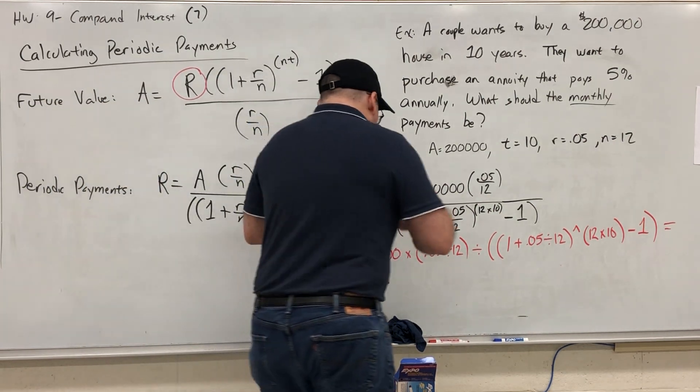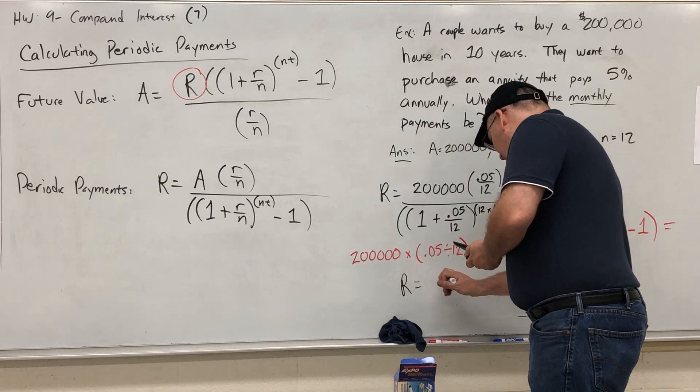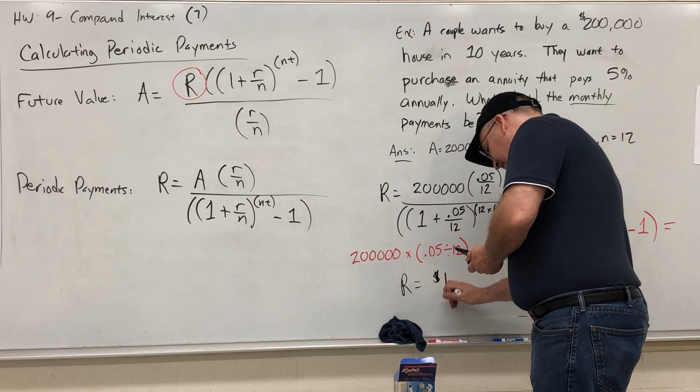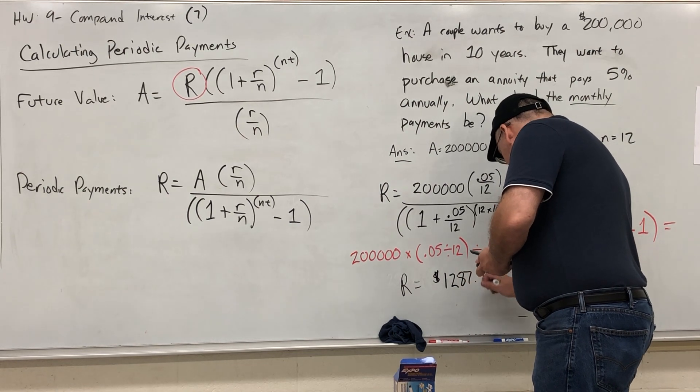I'm going to write down the answer I got. I'm going to recalculate it to make sure that it's correct. The answer I got to the nearest cent is $1,287.98.